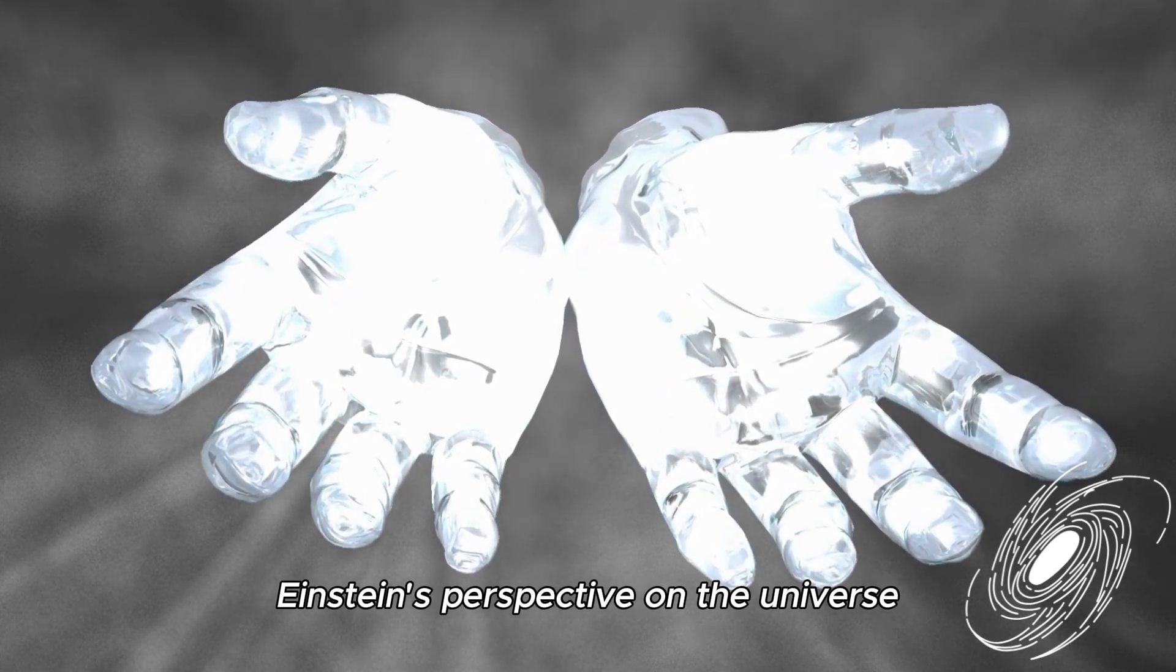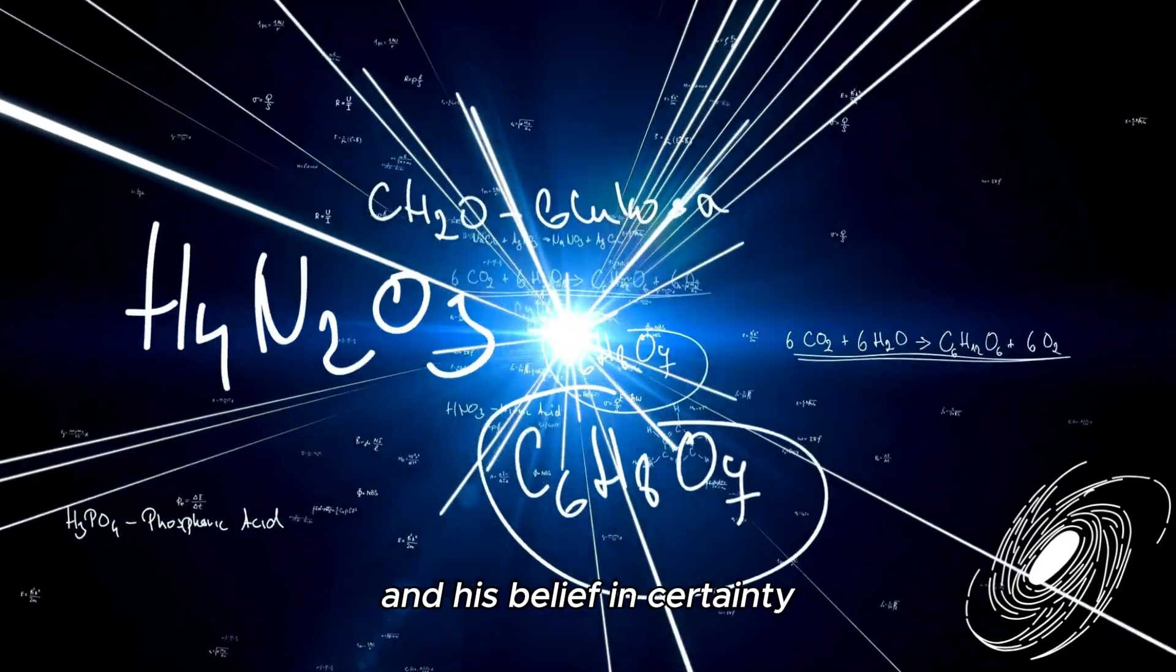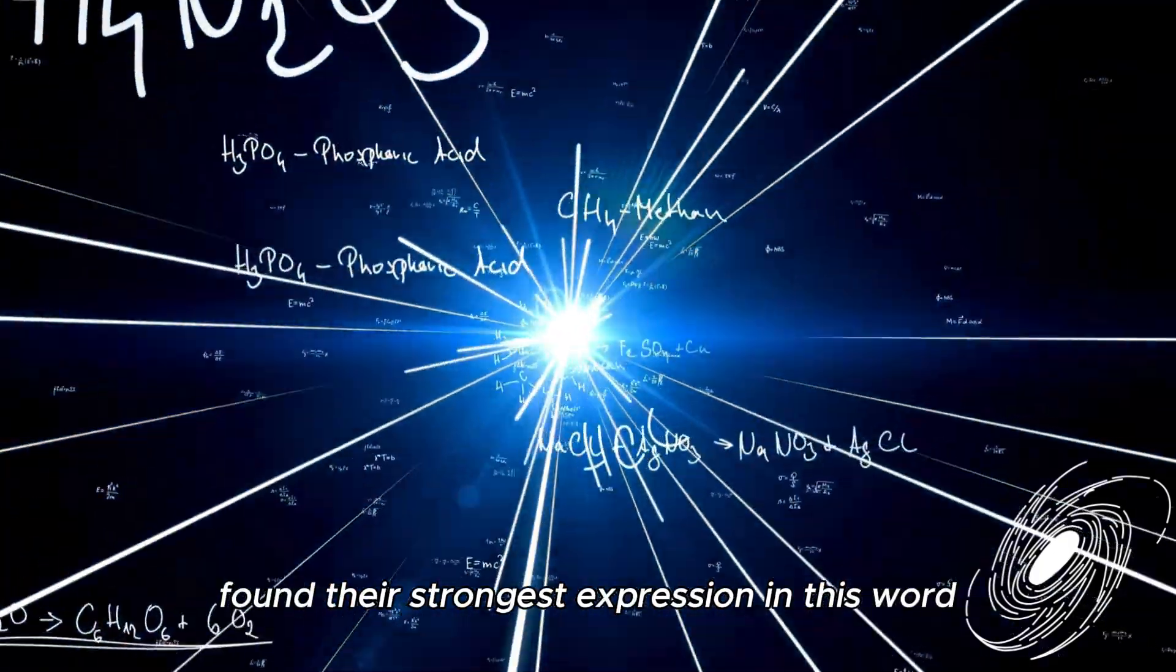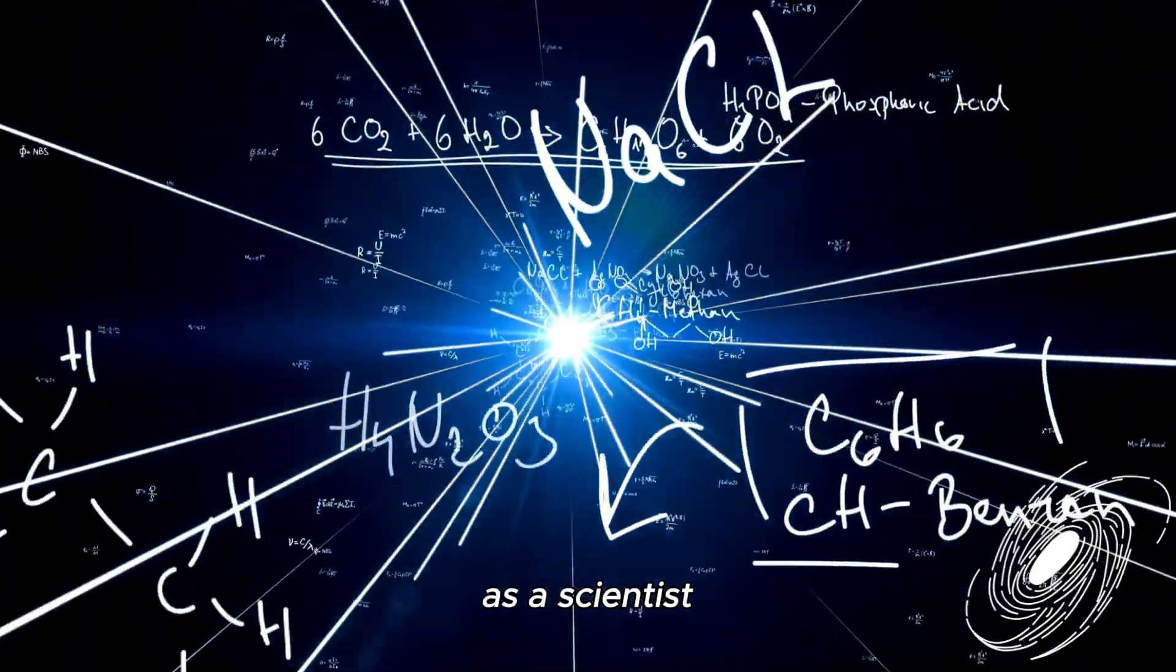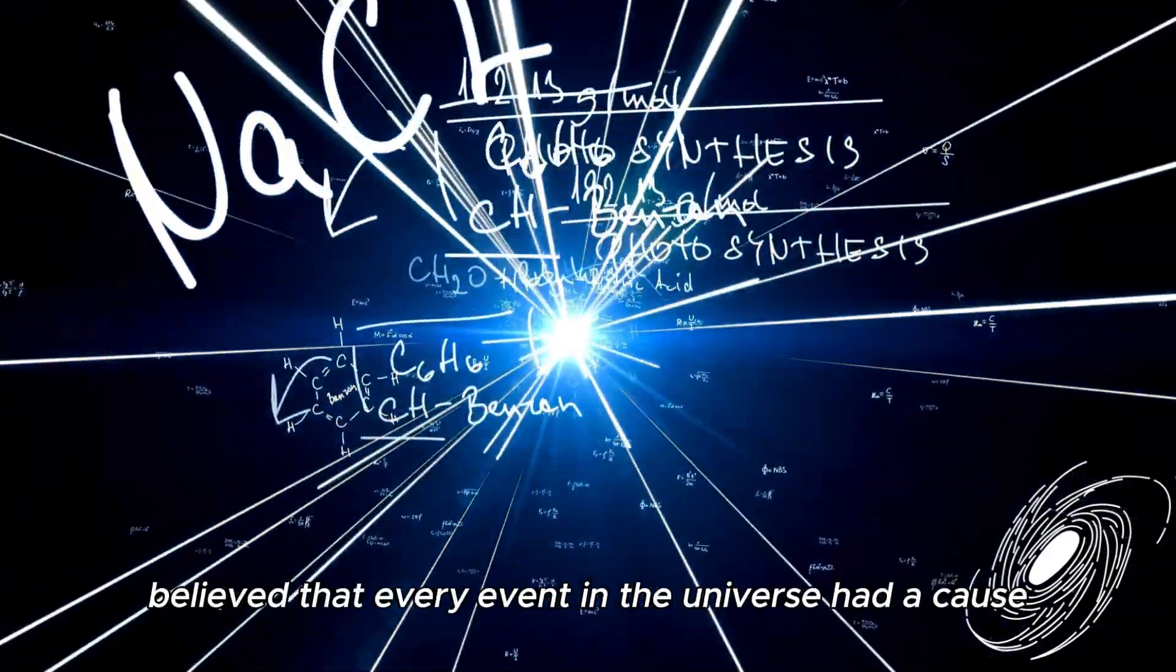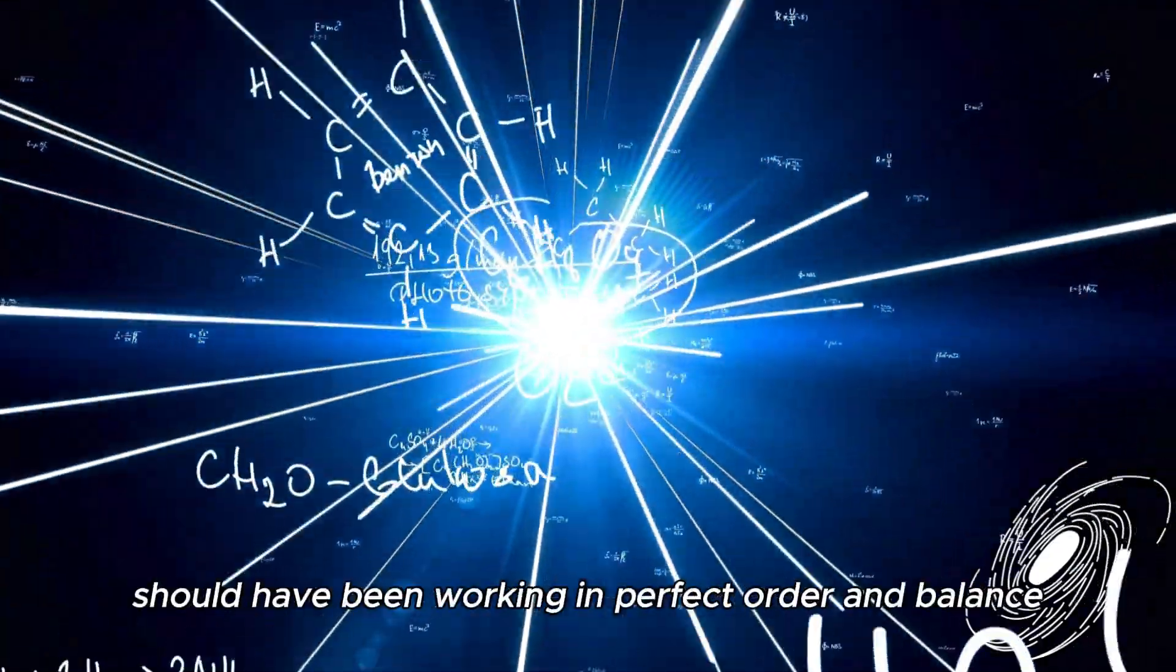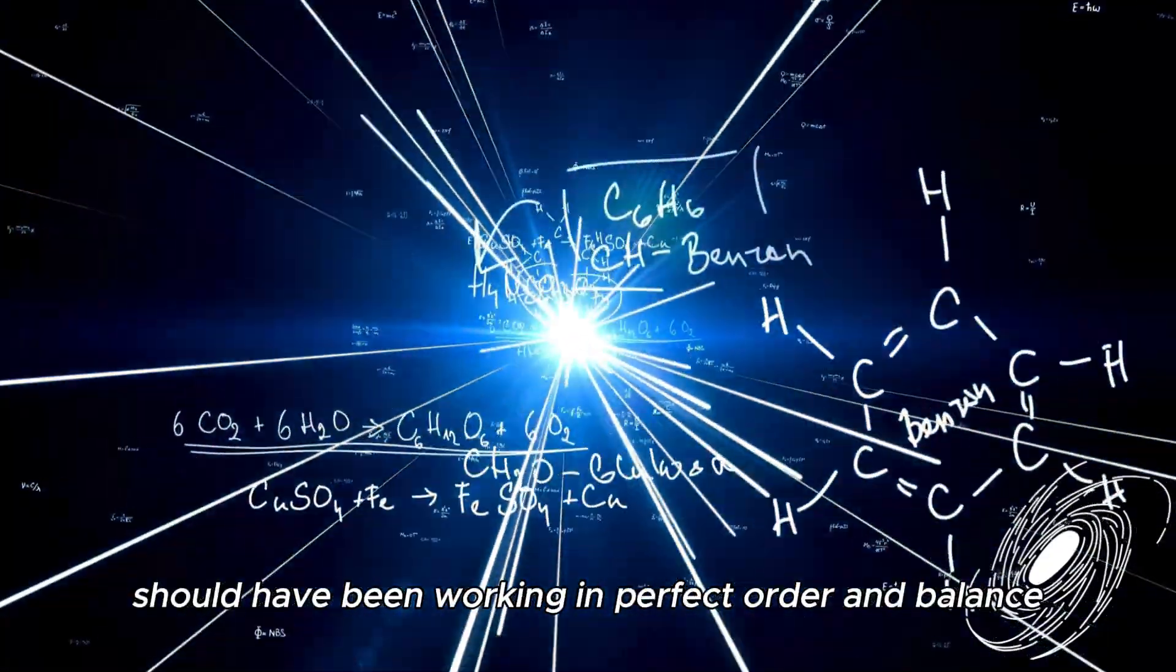Einstein's perspective on the universe, his curiosity in unraveling the mysteries of nature, and his belief in certainty found their strongest expression in this word. As a scientist committed to the predictability of classical physics, Einstein believed that every event in the universe had a cause. Everything should have been working in perfect order and balance.